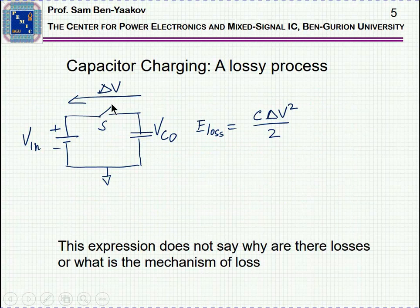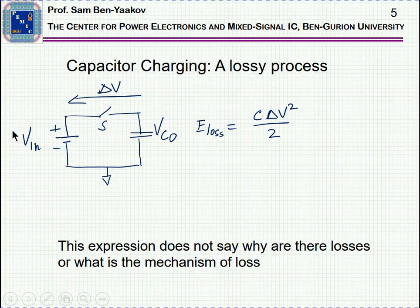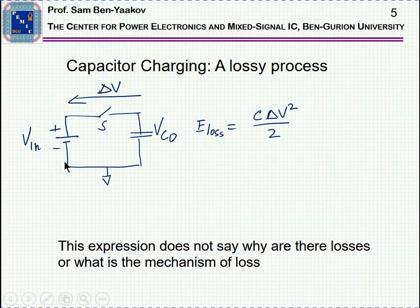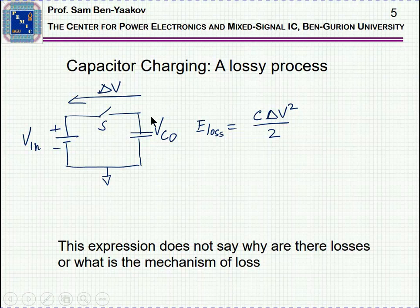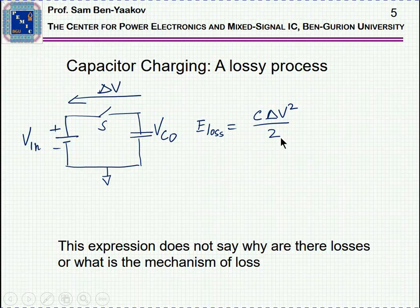What is the problem of capacitor charging? If you have a voltage source, a switch, and a capacitor which is pre-charged to some voltage V sub-zero, you turn on the switch, and the input voltage will charge the capacitor to the full voltage V in. If you calculate the amount of energy that went out of this source and the amount of energy that ended up at the capacitor, you will find that there is missing energy, and this energy, the lost energy, is equal to C delta V square over 2.